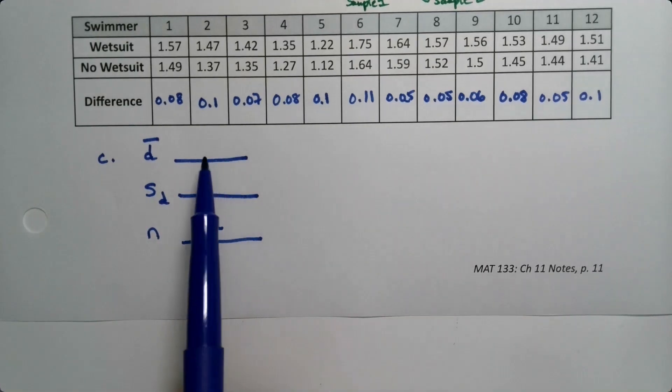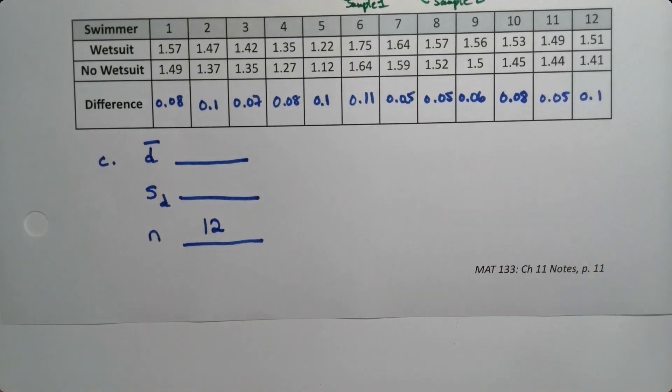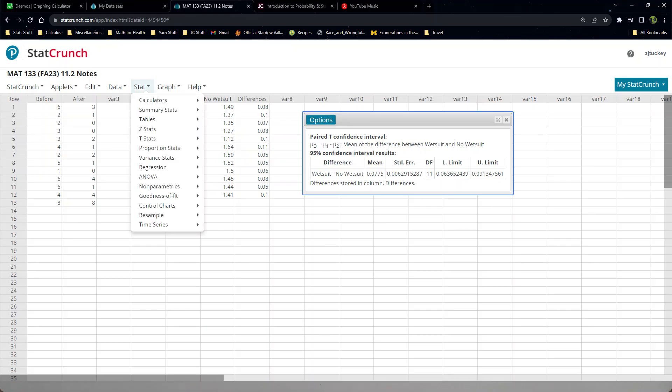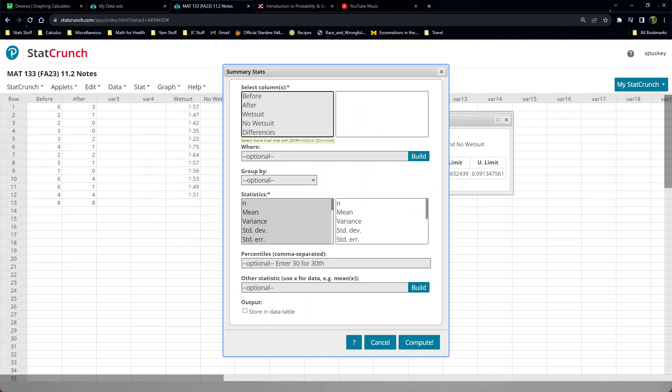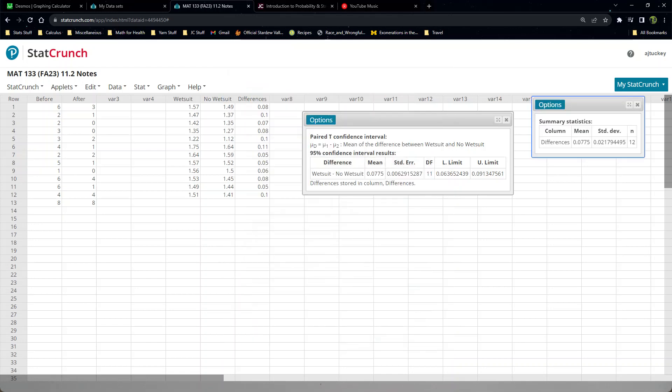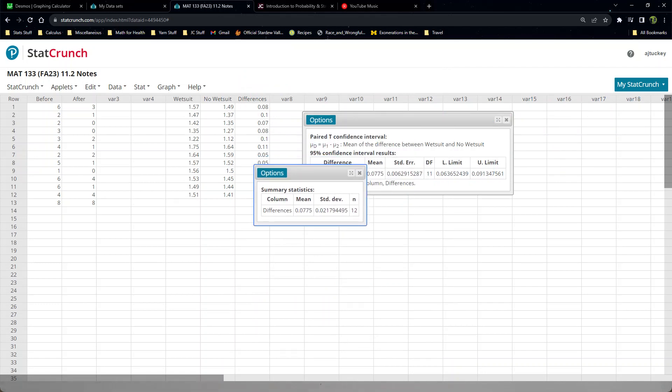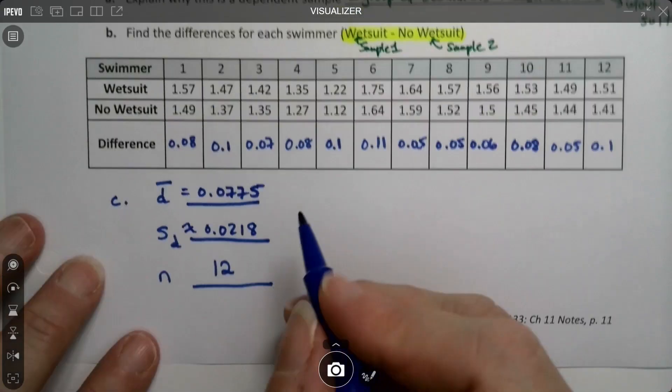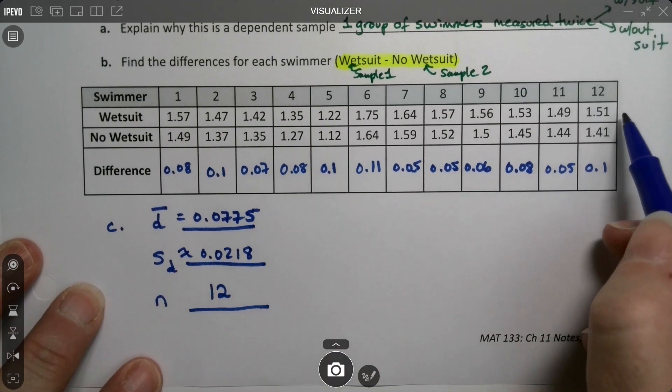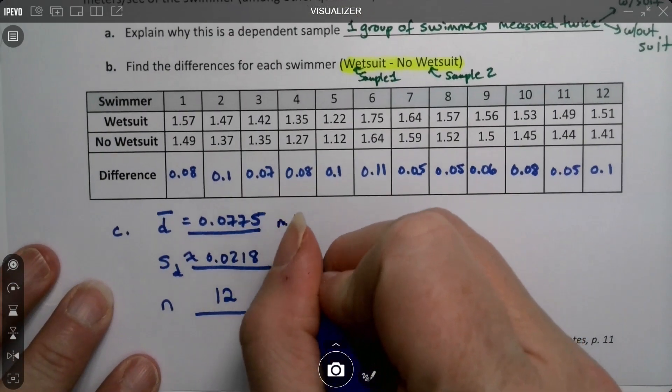How would you find D-bar and SD? That's review, we learned how to do that back in chapter 3. We would go Stat, Summary Stats, Columns, we would choose the differences, and then we say we want the mean, that's what D-bar is, and the standard deviation, that's what SD is. You can see that the D-bar is 0.0775 and the SD was 0.0218. Keep in mind this would be the same unit as our values. These are maximum speeds in terms of meters per second of these swimmers.